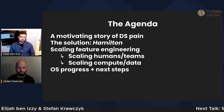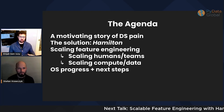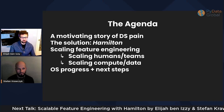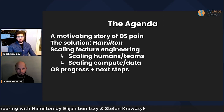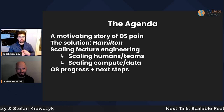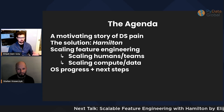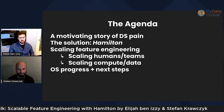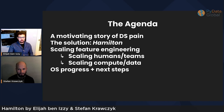On the agenda today: first, I want to tell you a story of the project that motivated Hamilton, which was a data science team going through a lot of pain at Stitch Fix. Then I'll tell you a little bit about the solution, how it works, and why we created it. Next, I'm going to talk about how it can help you scale feature engineering — by scaling I mean two things: scaling with the complexity of the business as the human and team component gets more complex, and scaling the compute and data, so handling bigger data and running on more machines. Finally, I'll talk about open source progress and next steps with Hamilton.